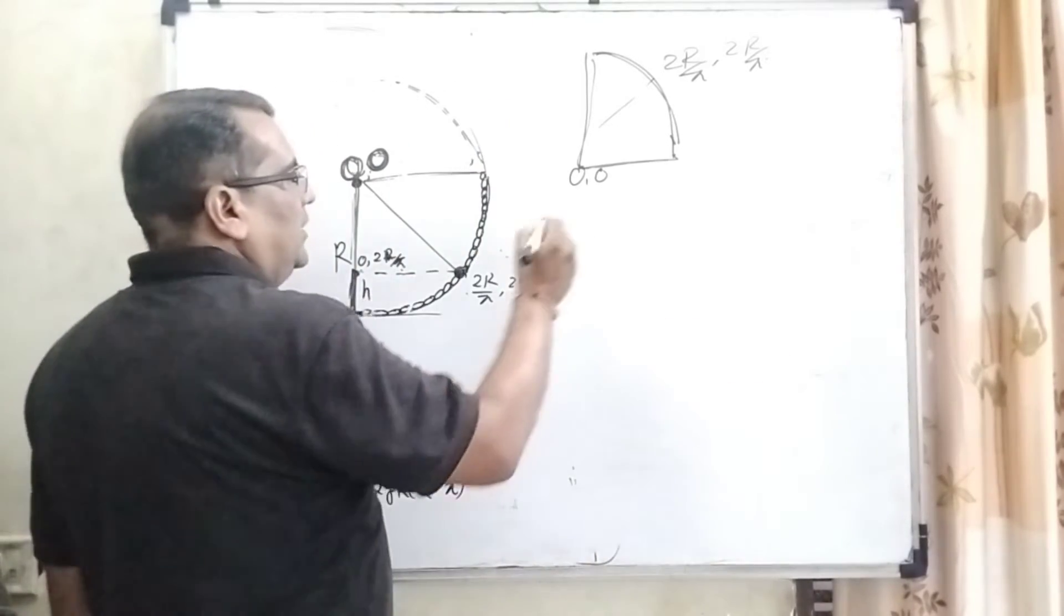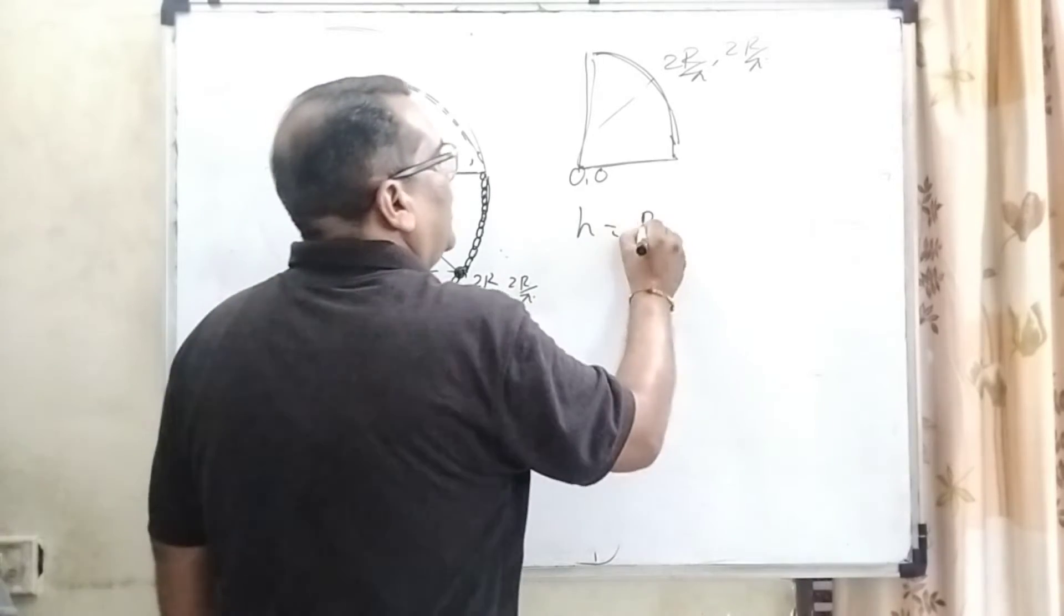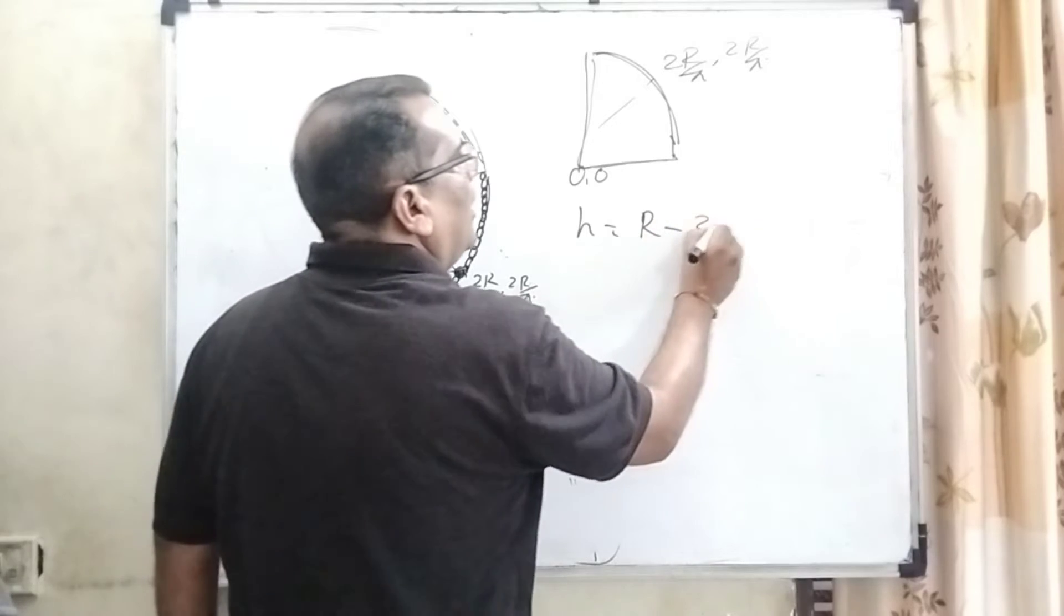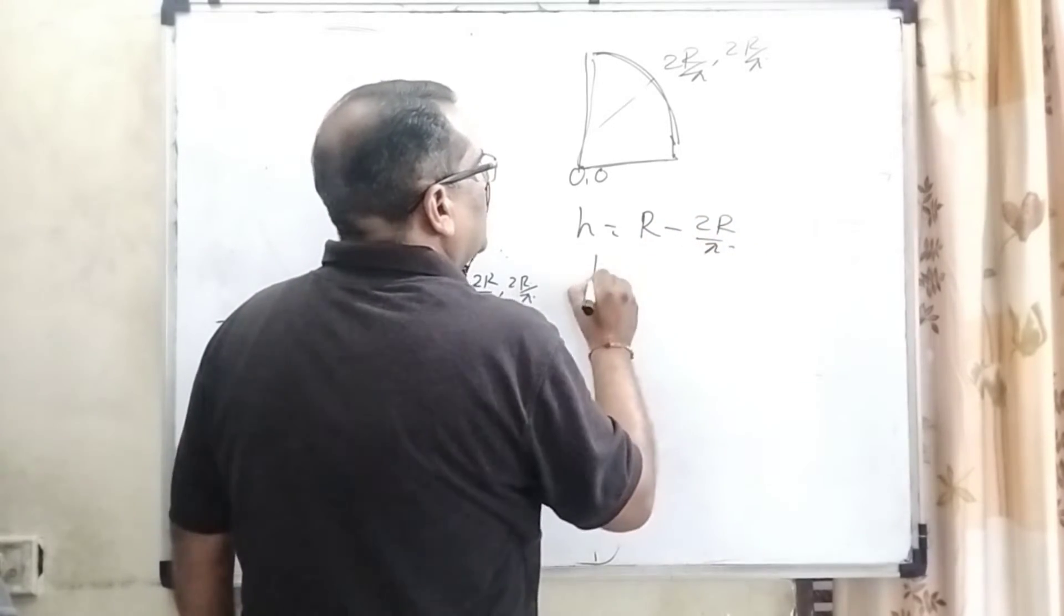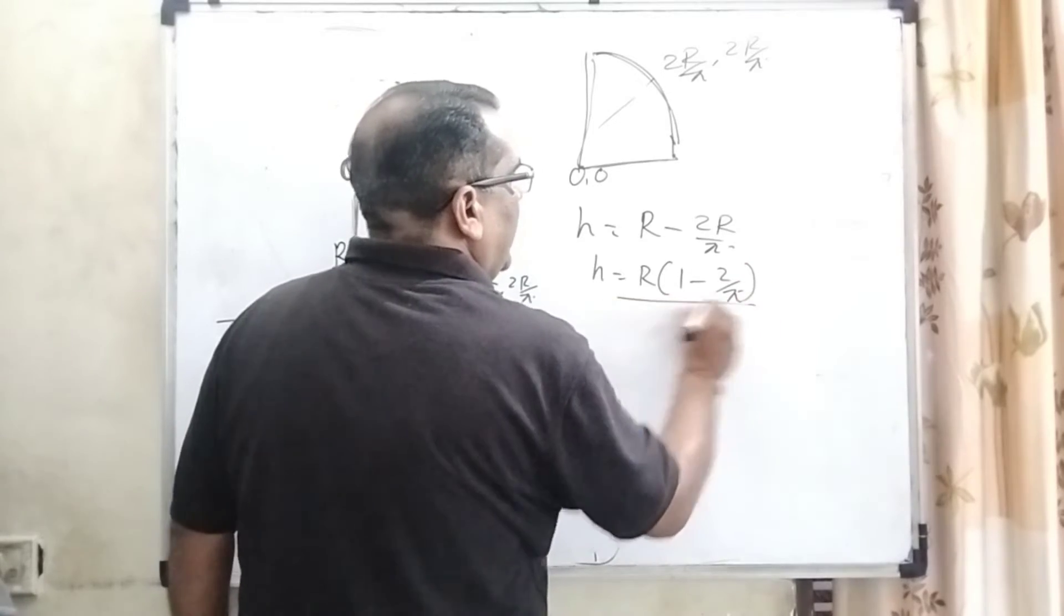We need only this distance h along the y-axis. So what is h? That is the total radius R minus this distance from the origin, which is 2R by pi. So h equals R times (1 minus 2 by pi). This is h.